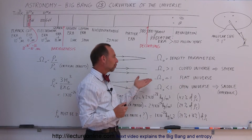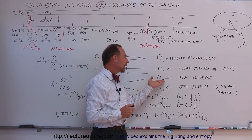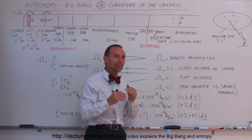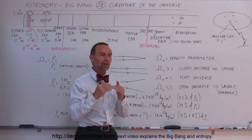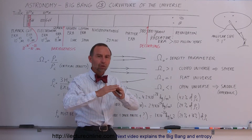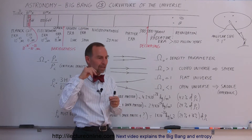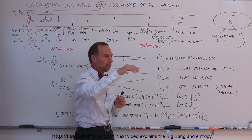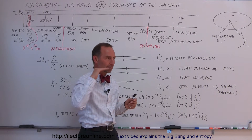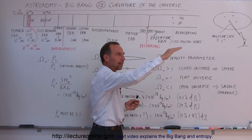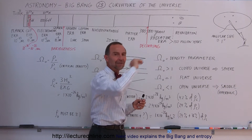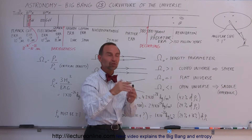A flat universe would be where the density parameter is equal to one, so it doesn't curve outward and it doesn't curve inwards. You keep on walking in a straight line outward and never get back to where you started, always moving away from the position where you started from.